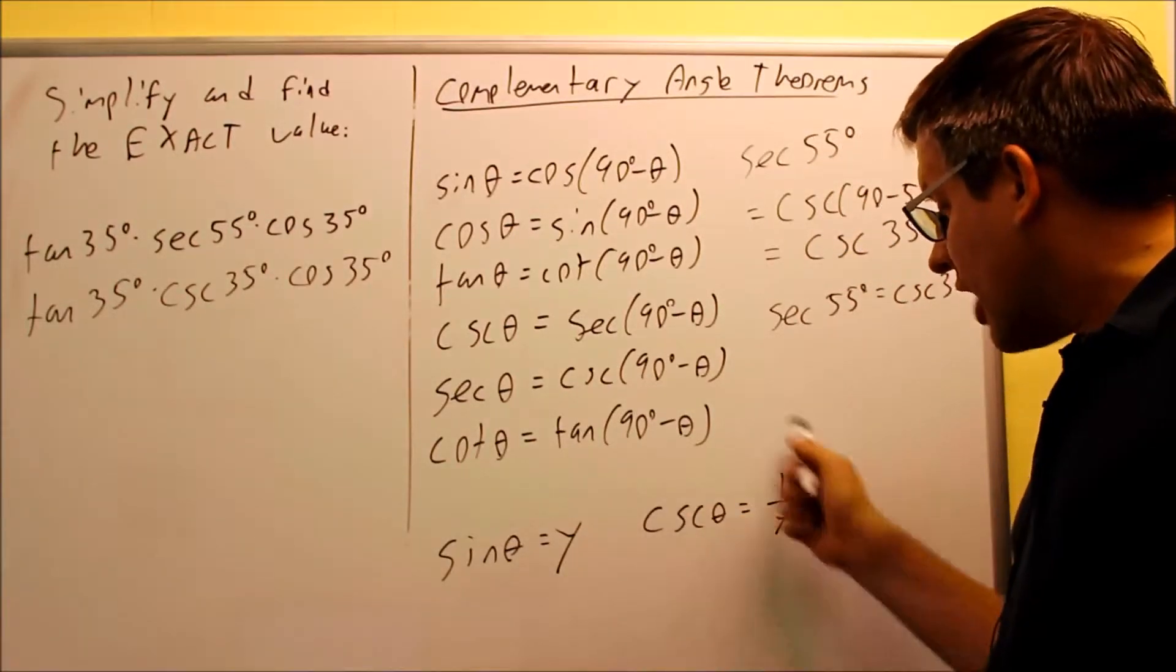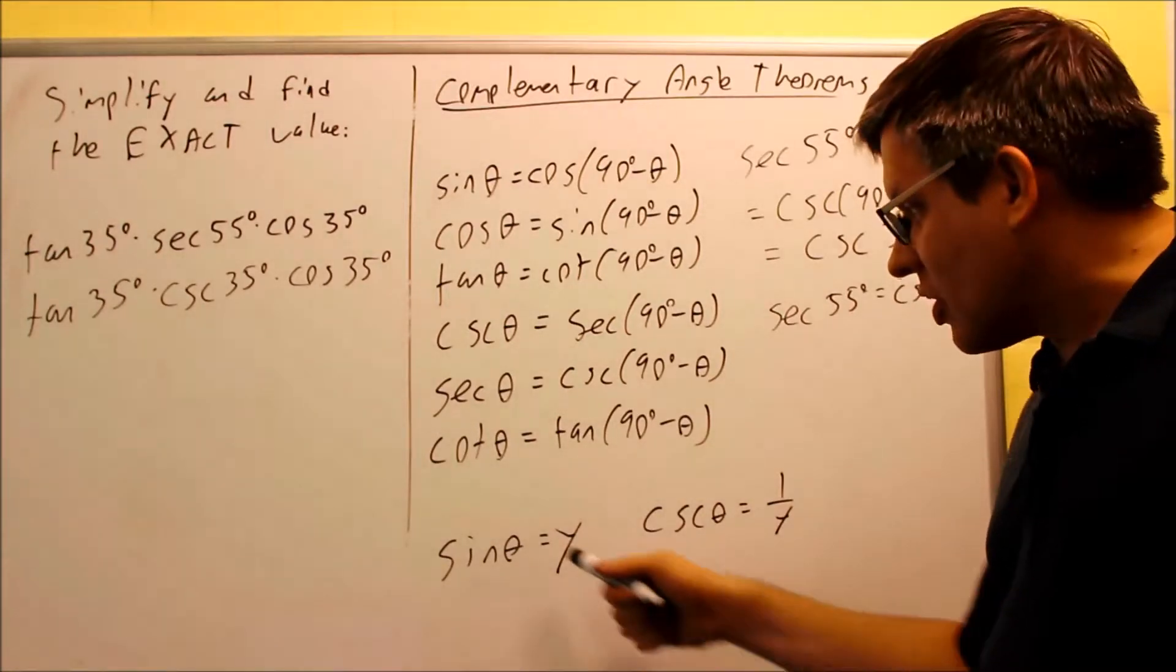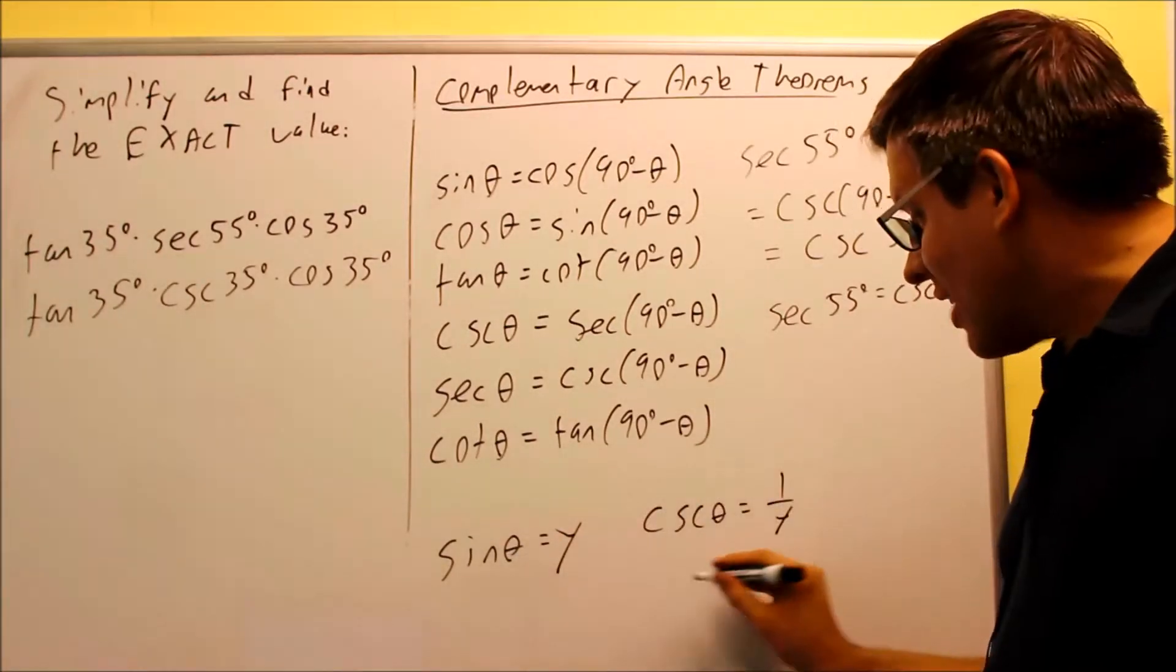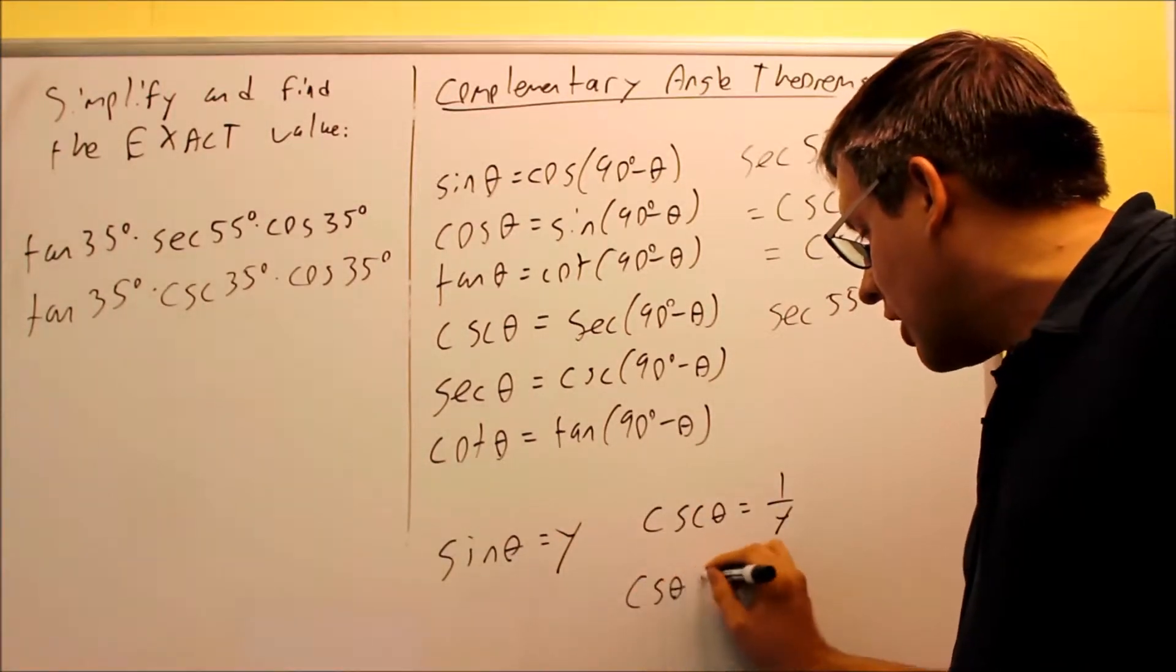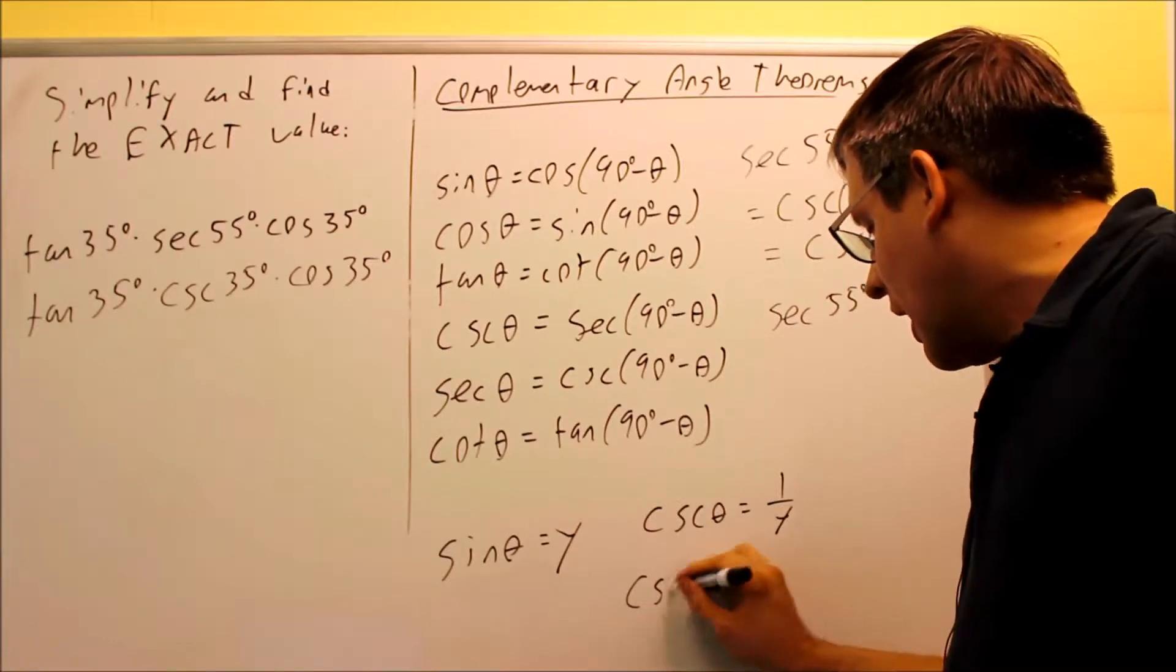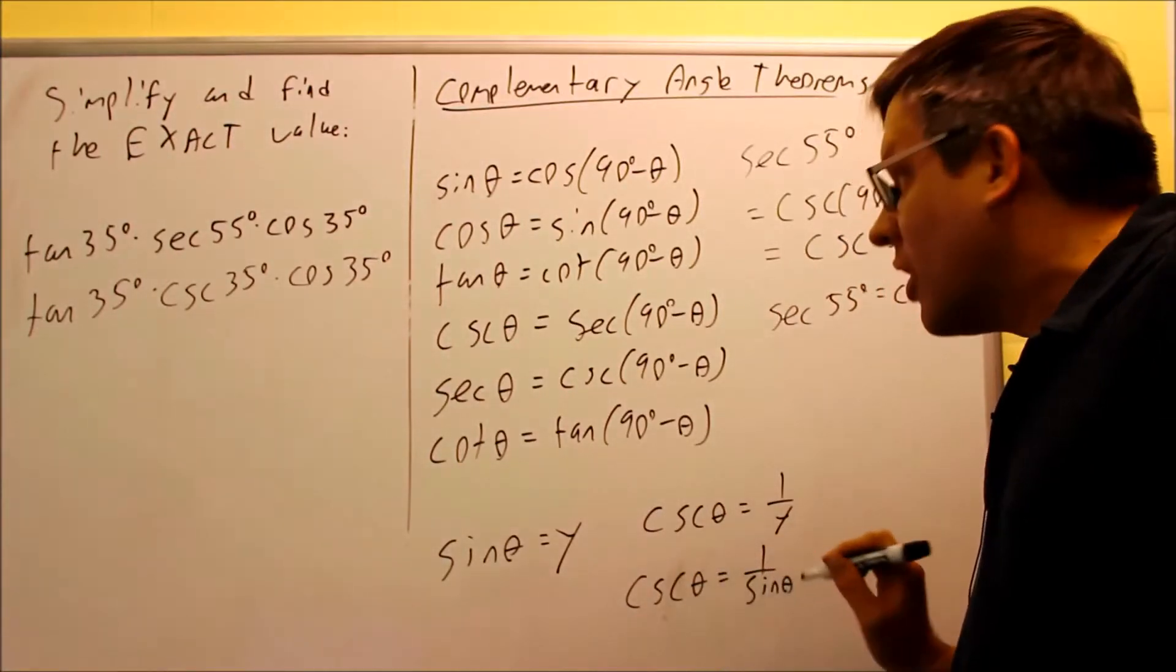Well, what I can do here is I can actually generalize this more because I know the y is equal to sine. That's going to tell me that cosecant theta is the same thing as 1 over sine theta.